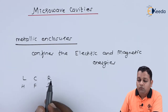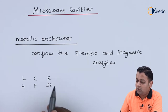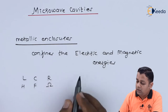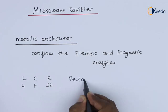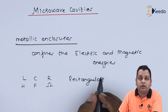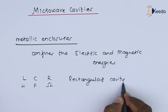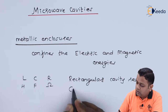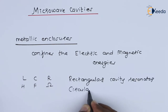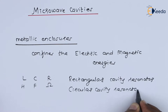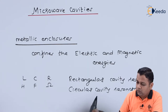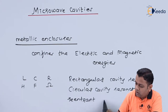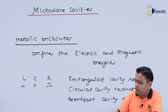We can have several types of Microwave Resonators, especially working with cavities. We can have the Rectangular Cavity Resonator, the Circular Cavity Resonator, and we also have the Re-entrant Cavity Resonator.